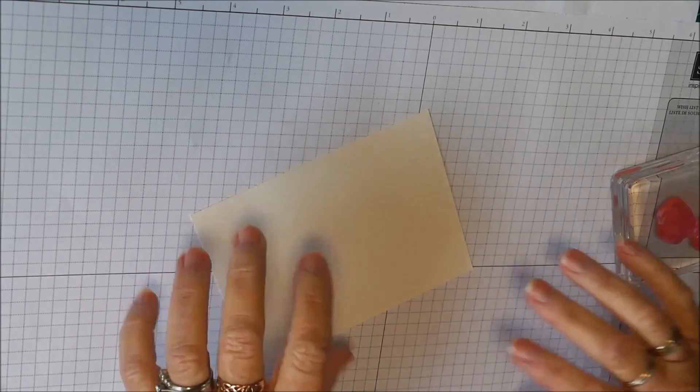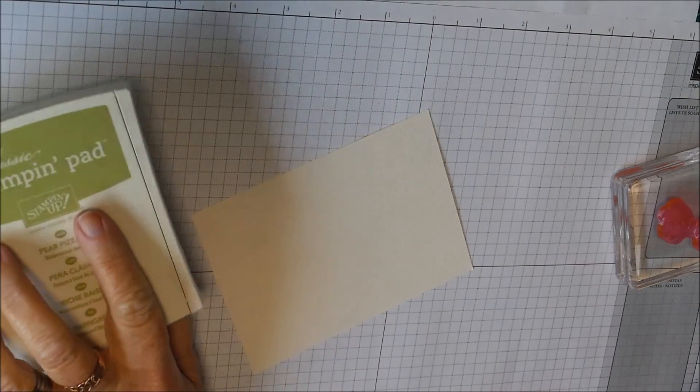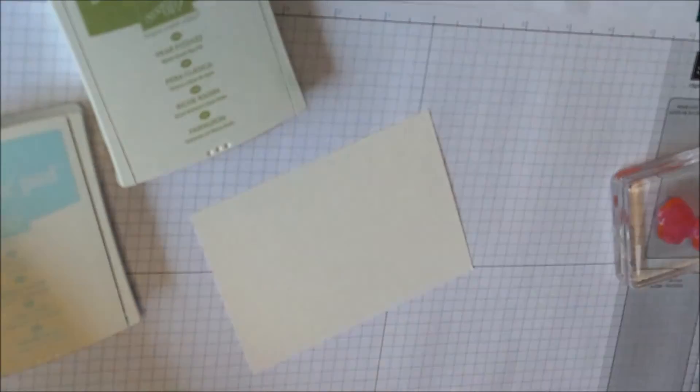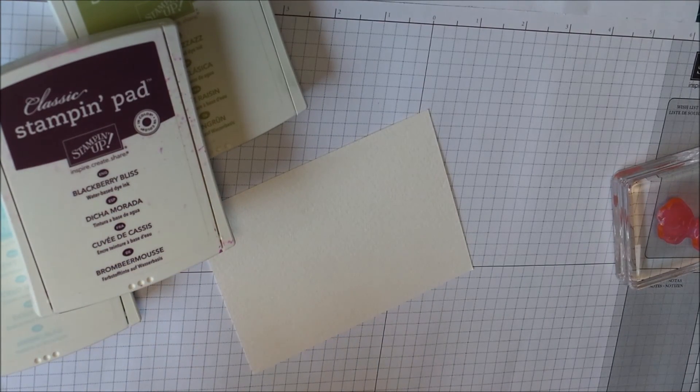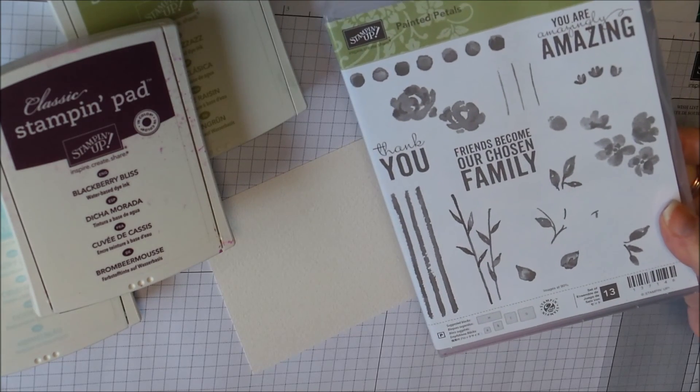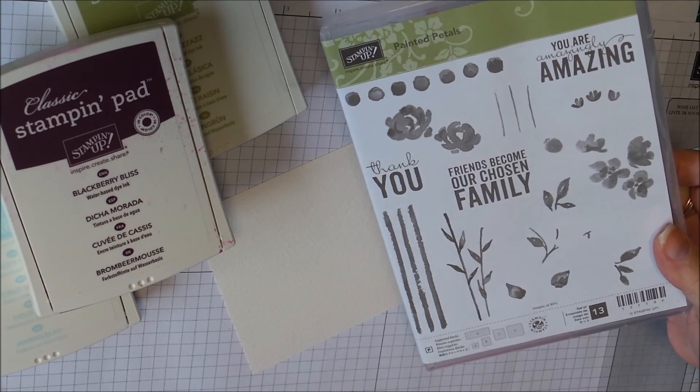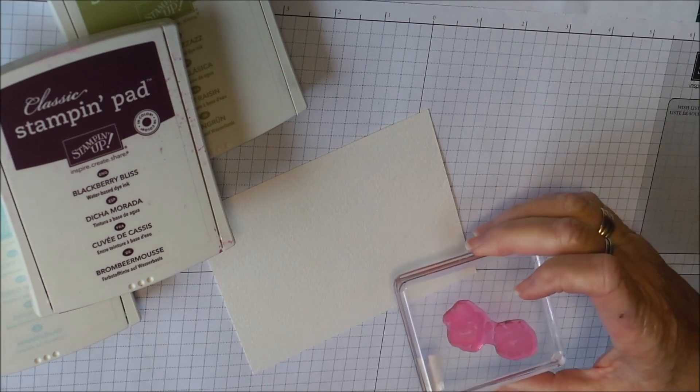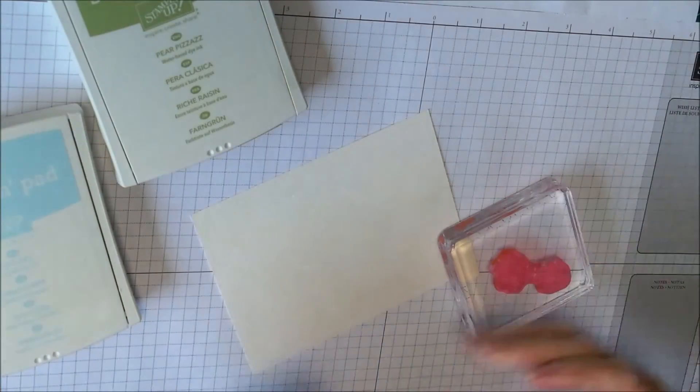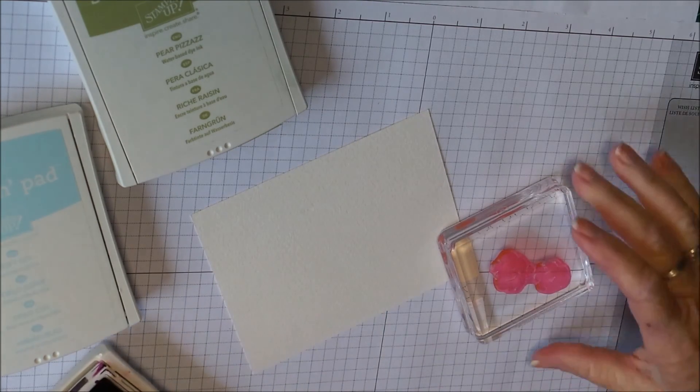All right so what you need to do is just take your piece of card and today I'm using three different colors. I'm going to start with Blackberry Bliss and I'm using the Painted Petals photopolymer set from the Occasions catalog. Now I've already mounted a couple of those images and you can see they've been quite well used and they do stain the photopolymers but it doesn't affect the stamping.